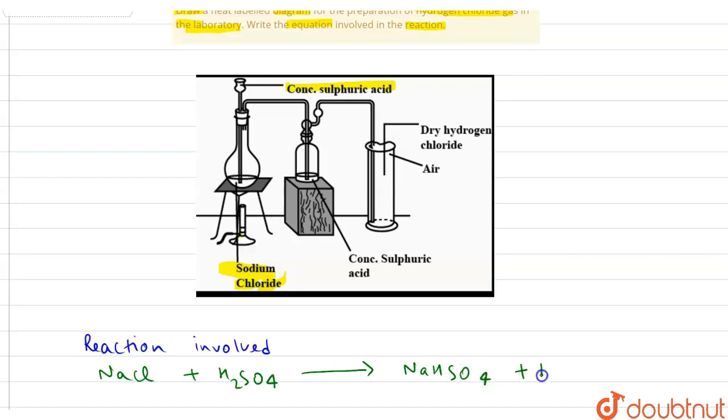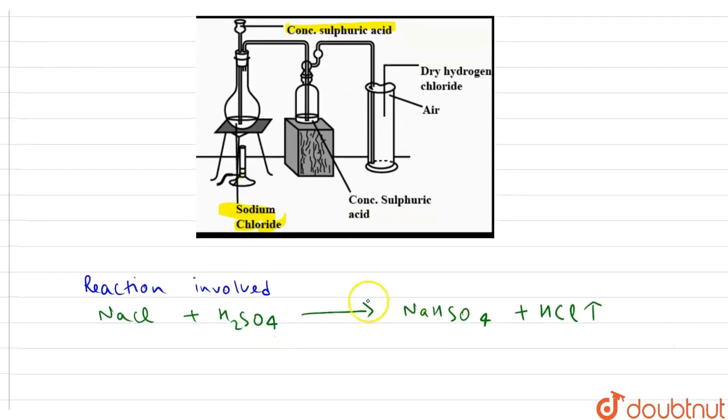Here the name of reactants and product can be written as: for NaCl it is sodium chloride.